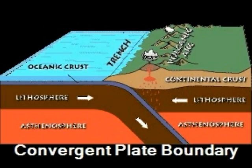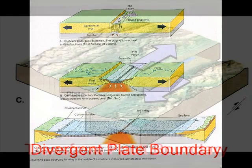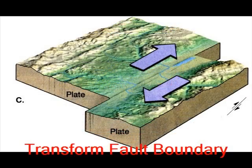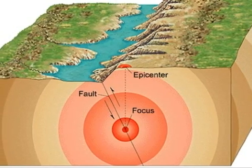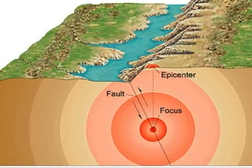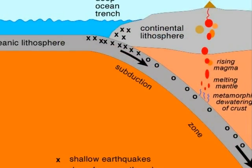The plate boundaries' interactions explain convergent, divergent, and transform faults. Earthquakes, volcanoes, and ocean ridges help to explain.